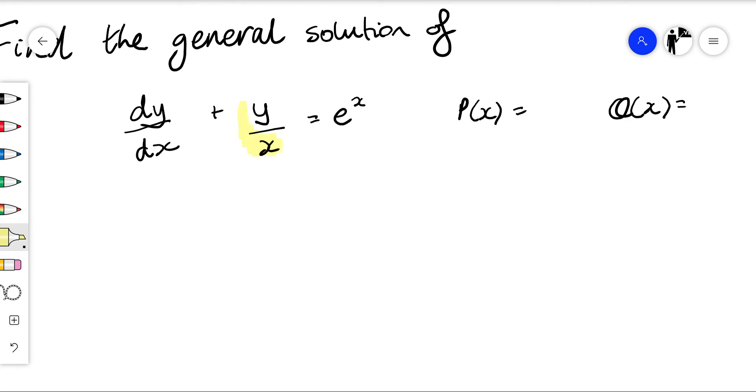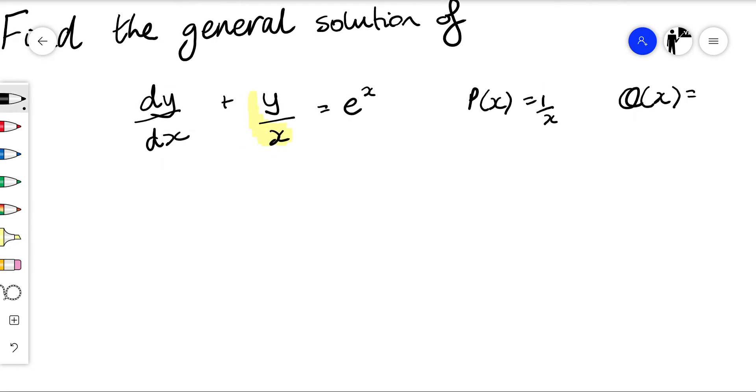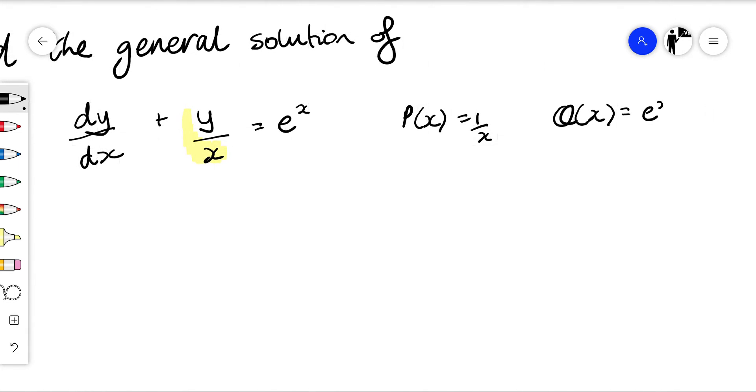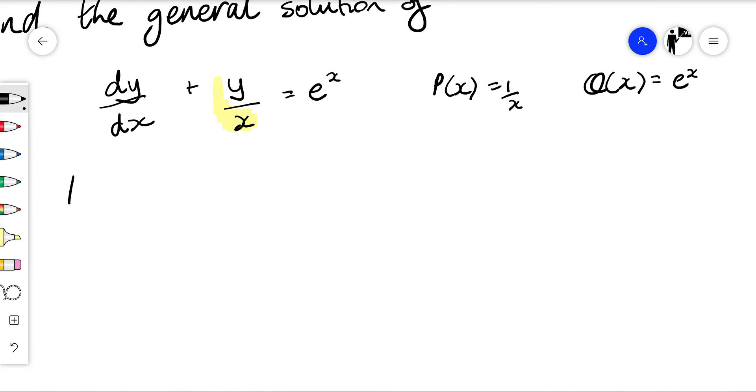so p of x is going to be 1 over x and q of x is going to be e to the power x. Okay, so we want to find our integrating factor. Integrating factor is mu of x and that's e to the power of the integral of p to the x